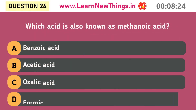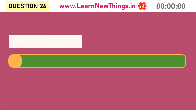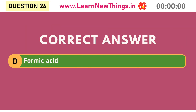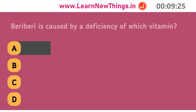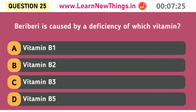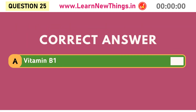Which acid is also known as metanoic acid? Formic acid. Beriberi is caused by a deficiency of which vitamin? Vitamin B1.